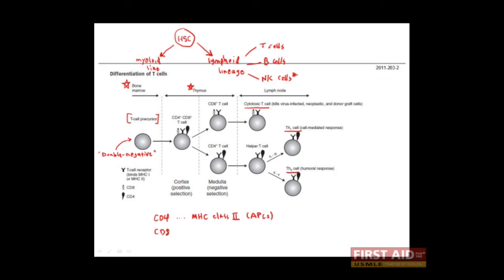CD8, on the other hand, helps the T cell recognize MHC class I molecules, which are found on all nucleated cells. If you're having trouble remembering this, use the mnemonic four times two equals eight, and eight times one also equals eight. That is, eight is the magic number. When you multiply CD4 by MHC class II, you get eight, and when you multiply CD8 by MHC class I, you also get eight.